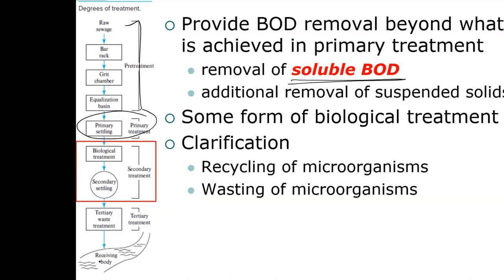In the grit chamber, we're removing inorganic material referred to as grit — sand, gravel, coffee grinds, eggshells — but we want to keep the organics in suspension. Grit tends to be the smelliest part of the plant. While the grit is inorganic, there's a significant amount of organic material in this waste.